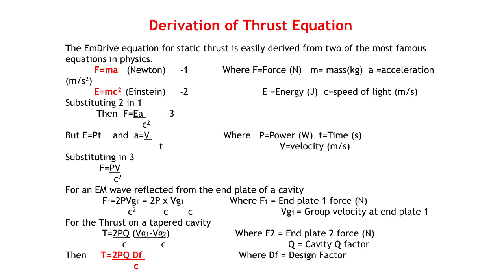Remember we have already defined T as F1 minus F2, and Q as a measure of the number of reflections that take place within the resonant cavity. This equation can be conveniently written as T equals 2PQ over C times DF, where DF is the design factor which is dependent on the diameter of the two end plates.